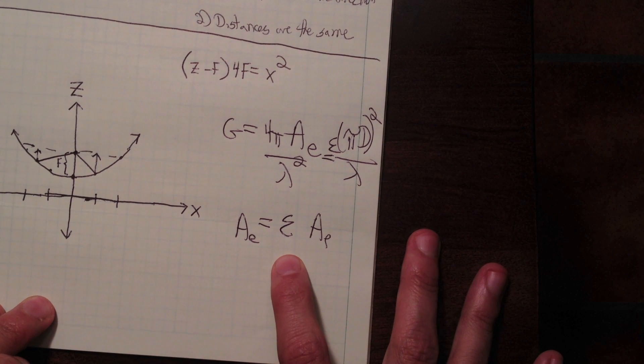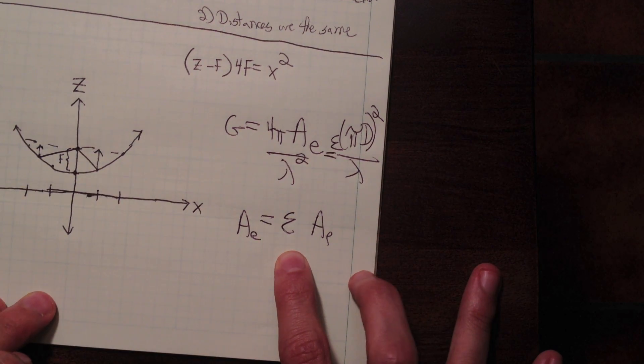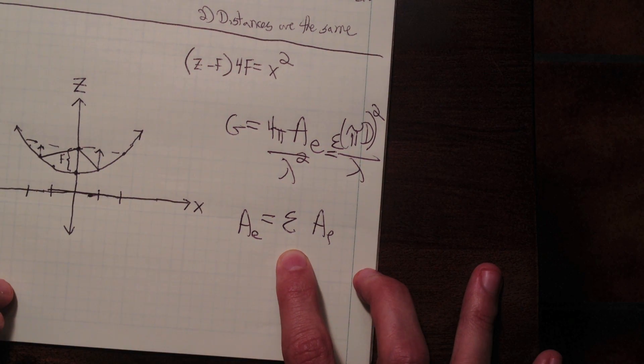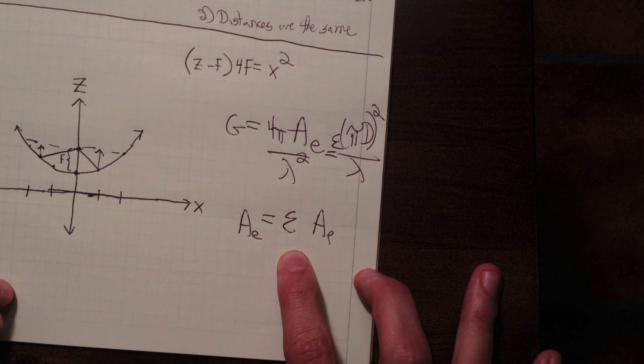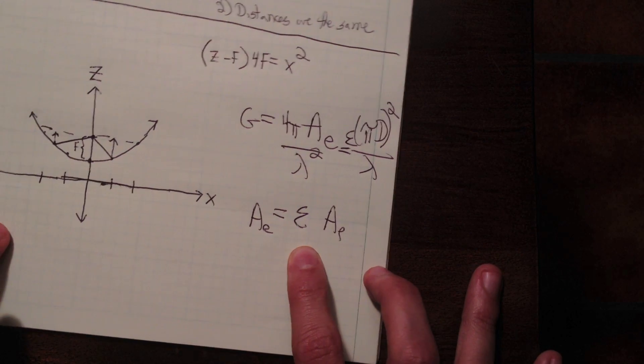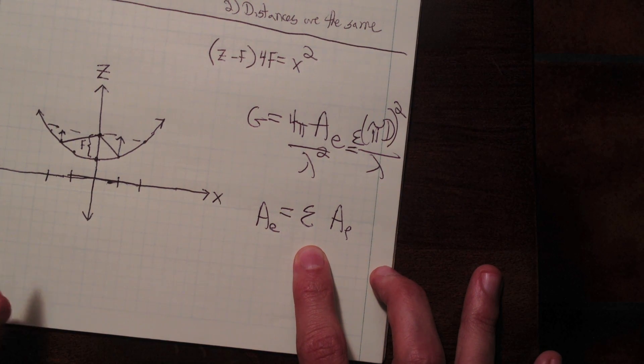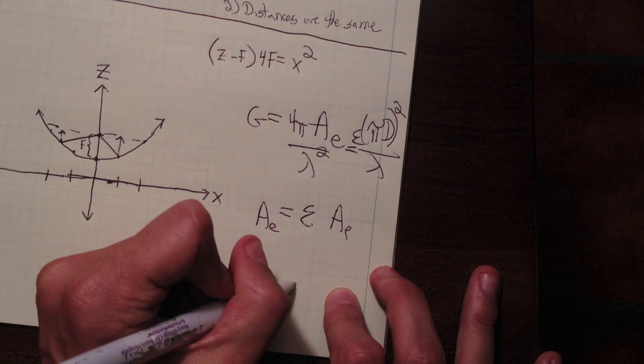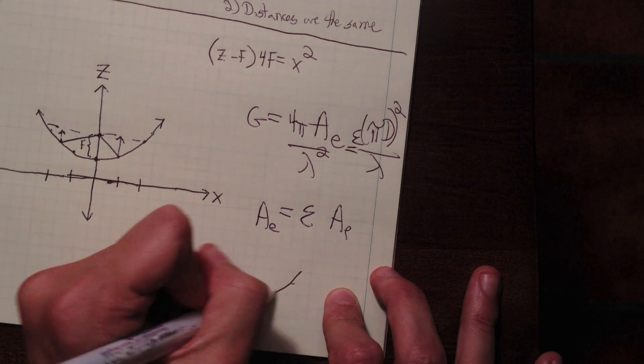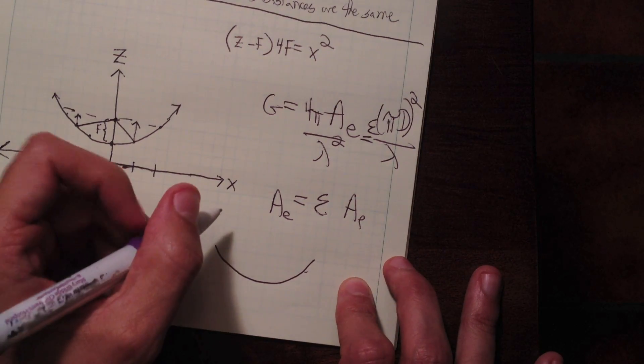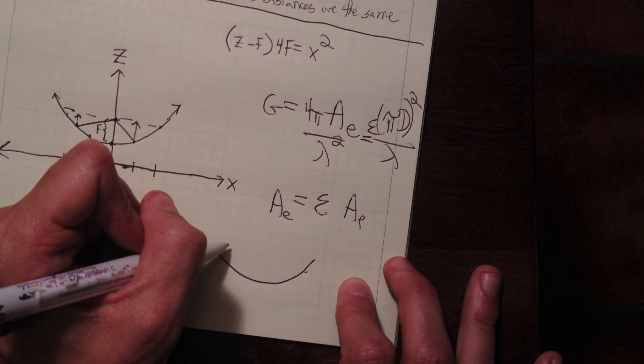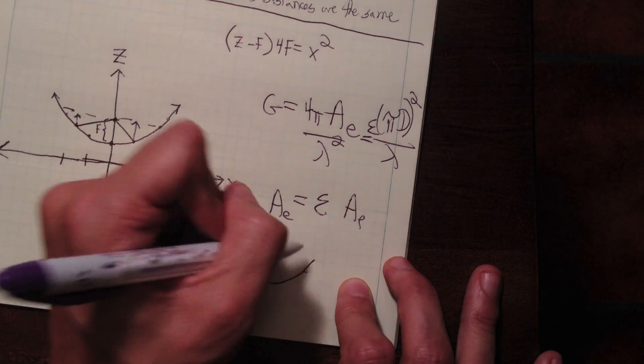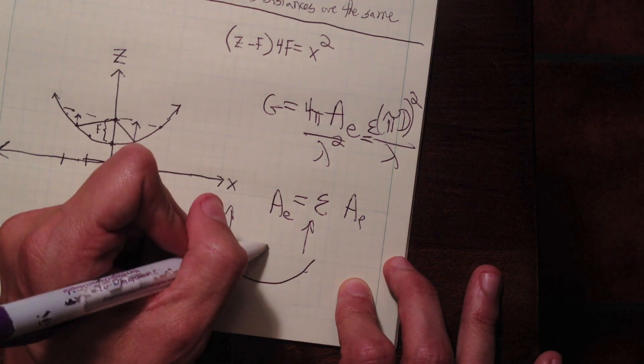So epsilon here is the efficiency, the aperture efficiency. So for a good design dish, it might be 40% up to 70% or so. And the things that affect it are the first, we'll call it aperture taper efficiency. So this is a measure of how uniform the E field is across the focal plane. So again, we want all the energy traveling up here. And so, for instance, if we use a very highly directive horn,